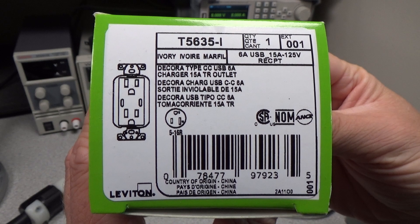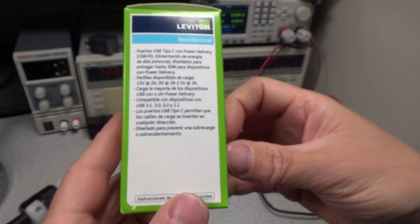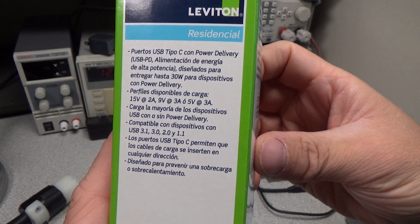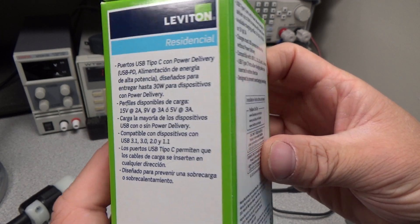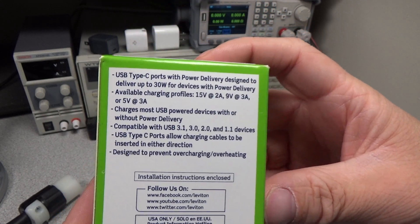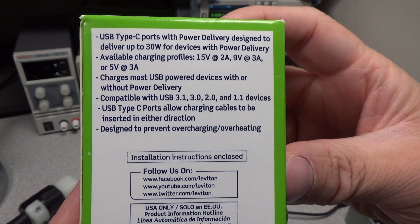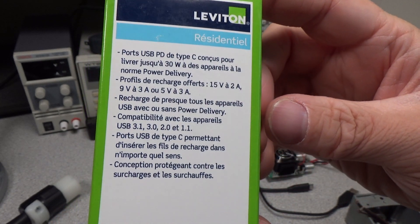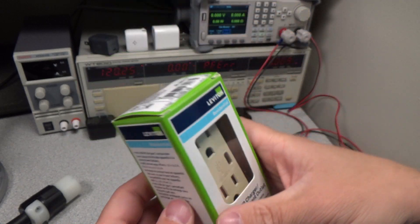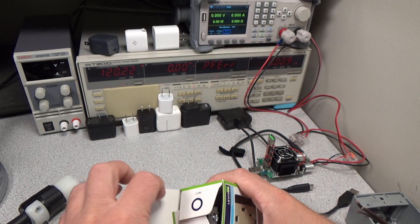We can see this is a two USB-C port type device. We can see that same CSA safety listing on there. And we can see that this has some power delivery profiles on it. So we can see it does 15 volts, 9 volts, 5 volts. We'll check all that out. We can see it's compatible with all kinds of different ports and everything. So this should be a fun device to test.